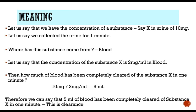What do I mean by that definition? Let us say that we have collected urine and we have found a substance X in the urine to be 10 mg. Let us say that we have collected the urine for one minute, so there is 10 mg of that substance X in the urine. Where did this substance come from? This came from the blood, because urine is an ultrafiltrate of the blood. Now if we find that the concentration of substance X in the blood is 2 mg per ml, then theoretically 5 ml of the blood would have to be completely cleared of that substance X to produce 10 mg in the urine.